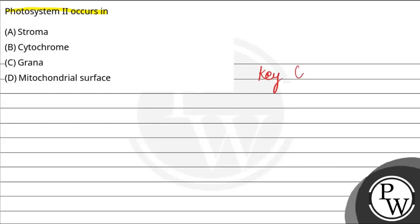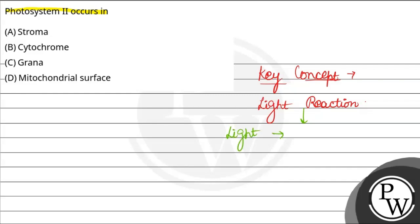The key concept here is light reaction. Photosynthesis में 2 reactions होती हैं — 1st light reaction and 2nd dark reaction. Light reaction होती है thylakoid points में, and dark reaction होती है stroma में.